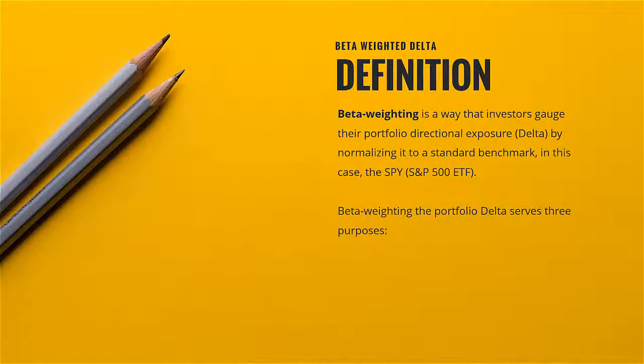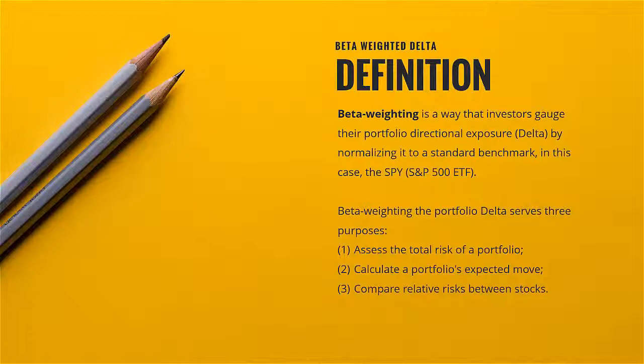Beta weighting the portfolio delta serves three purposes: number one, to assess the total risk of a portfolio; number two, to calculate a portfolio's expected move; and number three, to compare relative risks between stocks. Here's a simulation.